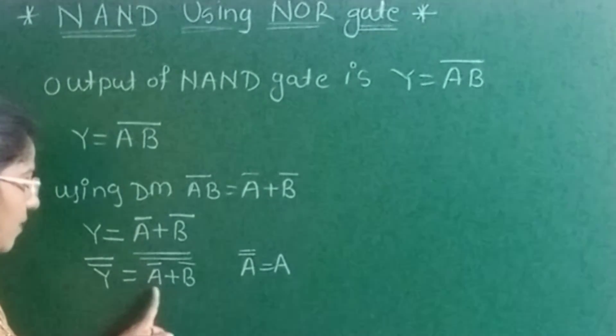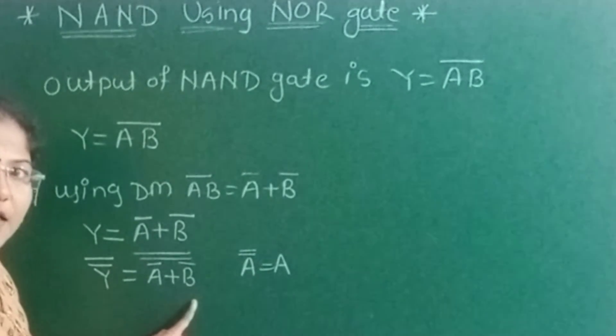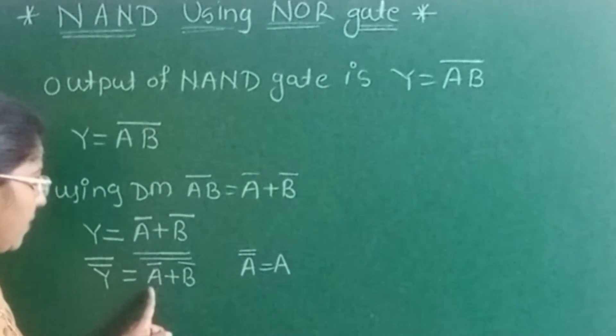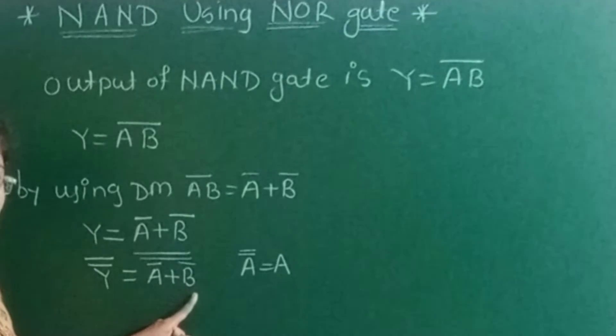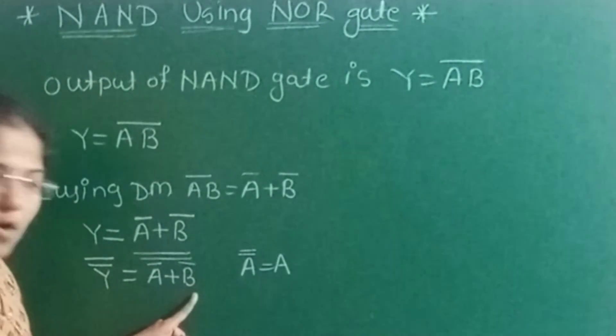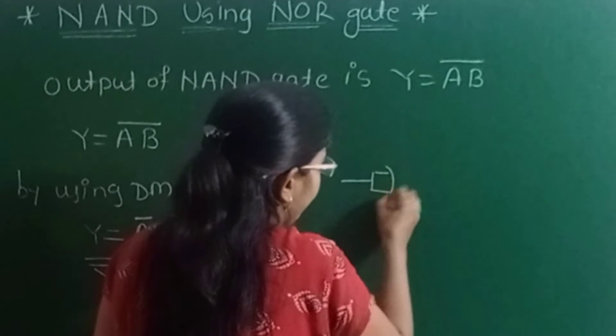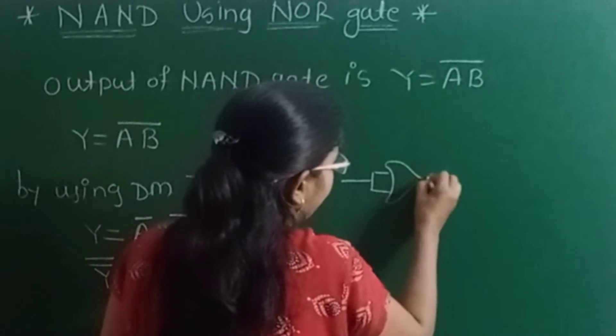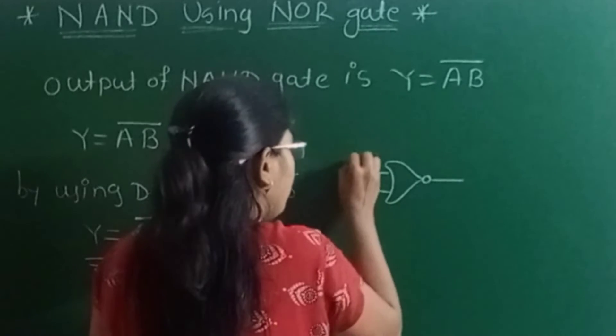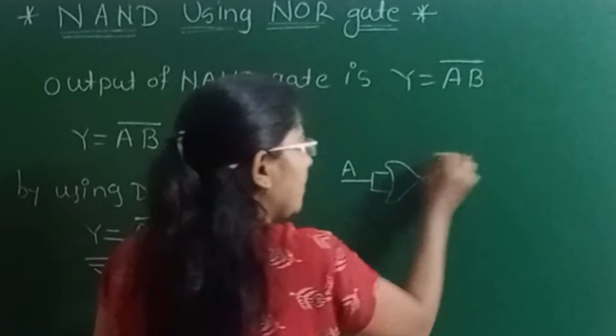You can see two inputs are there, A and B, but in their complemented form. So we have to use the NOR gate first to get their complement. Here I will use one NOR gate which will act as the inverter. First input A, its output A bar.